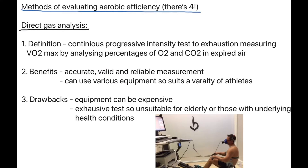Moving forward, we need to understand four methods of measuring your aerobic efficiency. The first is direct gas analysis. This is a continuous progressive intensity test to exhaustion, measuring your VO2 max by analysing the percentage of oxygen and carbon dioxide in your expired air. The benefits are that it's accurate, valid and gives reliable measurements, and you can use various equipment with a variety of athletes — a rower, a bike, or running. The drawback is it is expensive and therefore exclusive to elite athletes, and it's an exhaustive test unsuitable for the elderly or those with underlying health conditions.